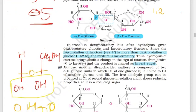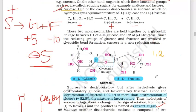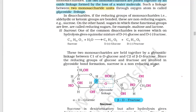This process is called inversion of cane sugar. Sucrose is the invertase substrate, and the product is called invert sugar. Sucrose is a non-reducing sugar.